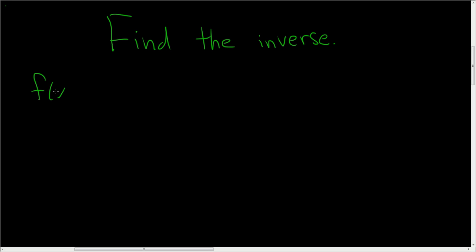A function and its inverse basically undo each other. For example, if we have f of x equals x plus 3, let's think about what f does. f takes x and adds 3 to it. So the inverse function undoes that. It must take x and subtract 3. Boom, we're done.